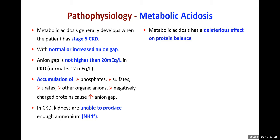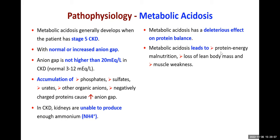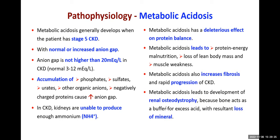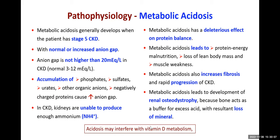Metabolic acidosis has deleterious effects on protein balance, leading to malnutrition, protein-energy malnutrition, loss of lean body mass, and muscle weakness. It can lead to increased fibrosis, progression of CKD, and development of renal osteodystrophy. When there is more acid in the blood — acidemia — bones buffer the excess hydrogen ions by losing calcium and phosphate, becoming weak. Acidosis may also interfere with vitamin D metabolism.